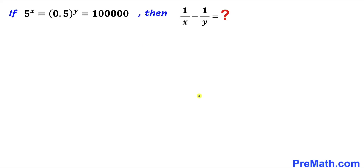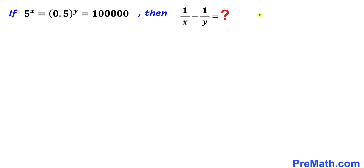Let's go ahead and get started with the solution. In order to solve for 1 over x minus 1 over y, we must solve this exponential equation for x and y first. So we are going to look for the x value and y value first.